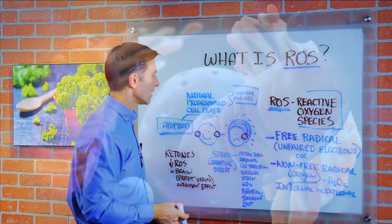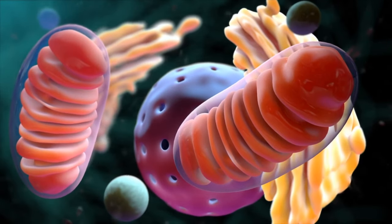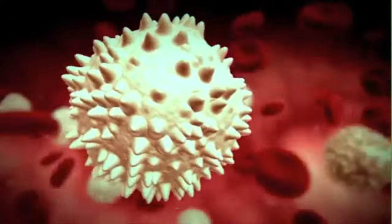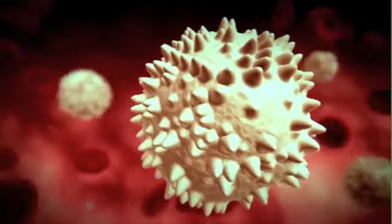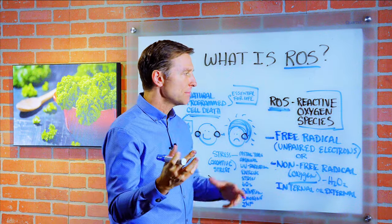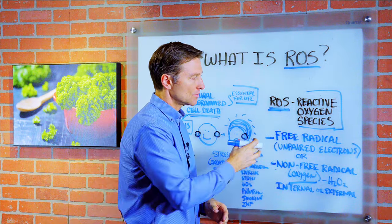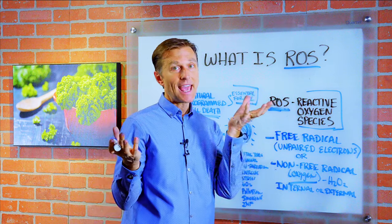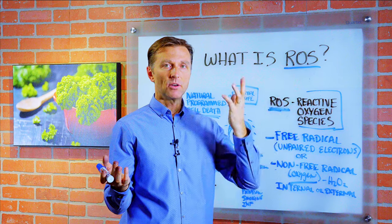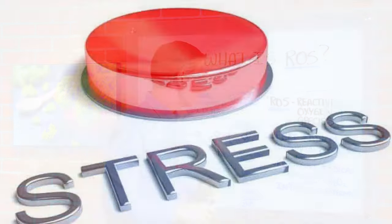So ROS has the ability to eliminate certain things that we don't want in the body. And if that involves killing off certain mitochondria or whatever, that's a good thing. Even your white blood cells produce these to actually kill off microbes — that's how it dismantles certain viruses. So your body has this interesting balance between free radicals or oxidants and antioxidants, and you can get antioxidants environmentally as well.